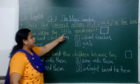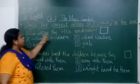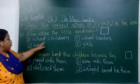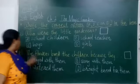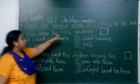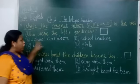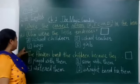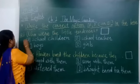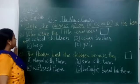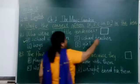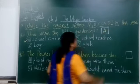First question: Who are the little gardeners? Jho chote chote gardeners hain? Option A: school children. Option B: school teachers. Option C: boys. Option D: girls. The correct answer is Option A — school children. So we write A in the box.